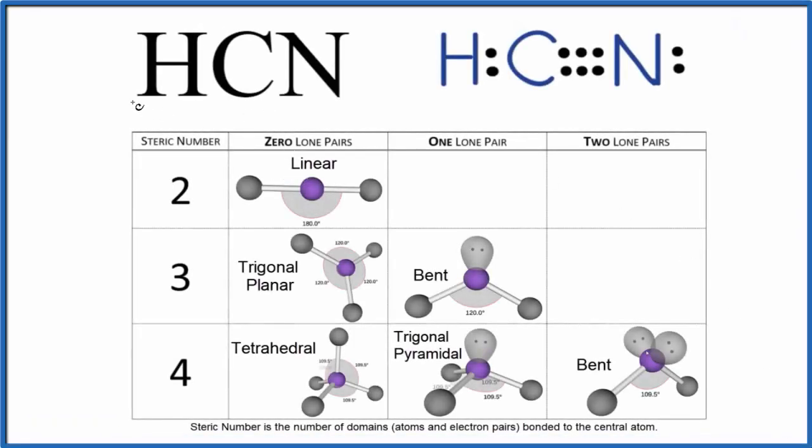Let's determine the molecular geometry of HCN. This is hydrogen cyanide. So we start with a valid Lewis structure.